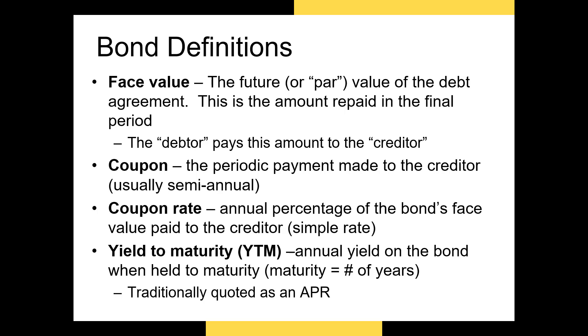If that same bond made semi-annual coupon payments, then the borrower would need to pay its bondholders two semi-annual payments of $25 every six months.